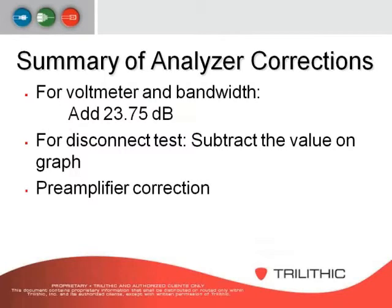To summarize analyzer corrections: since your analyzer is not a voltmeter and the filter is not a square filter, add 23.75 dB. Then perform your disconnect test and subtract the value from the graph. Use a preamp to get further out of the noise floor. The 8821QR has a built-in preamp as well.